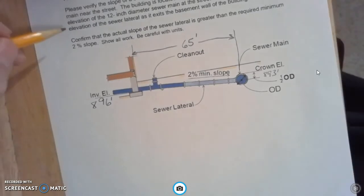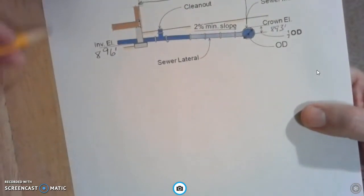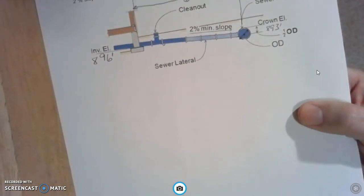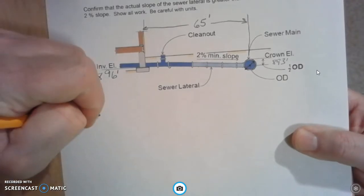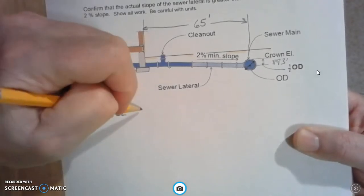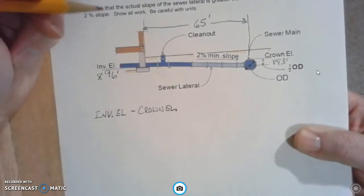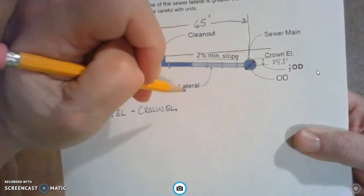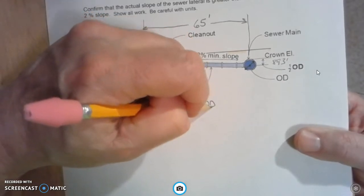Now it wants us to confirm that the actual slope of the sewer lateral is greater than the required minimum 2% slope. Show all work and be careful with units. So let's write down the formula here first for calculating the slope. It's going to be the invert elevation minus the crown elevation plus one half of the outside diameter of the pipe.